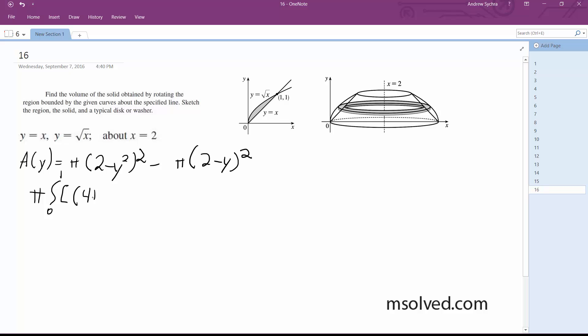This becomes 4 plus y to the 4th minus 4y squared minus quantity 4 plus y squared minus 4y dy. All right, so fully integrated... well, I'll take it one more step. So pi, still waiting to integrate, but this simplified out, this becomes 4 plus y to the 4th minus 4y squared minus 4y squared plus 4y dy.